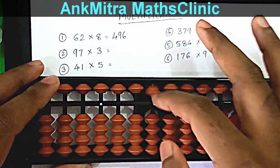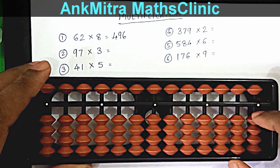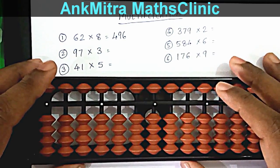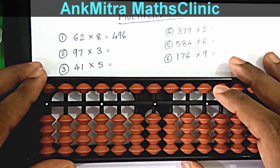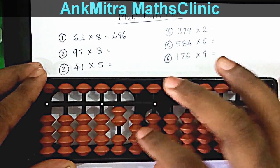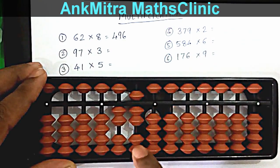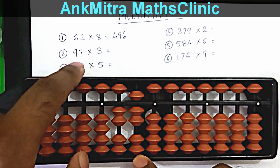The second example is 97 multiplied by 3. We start with the tens place digit: 9 times 3 is 27. This 27 will be taken from the hundreds place — 2 on the hundreds place and 7 on the tens place.